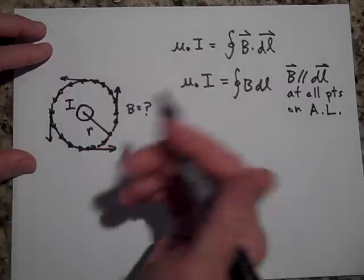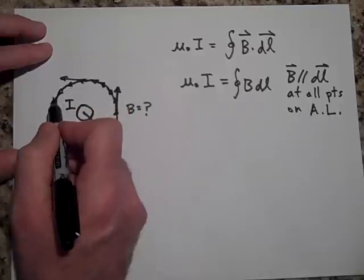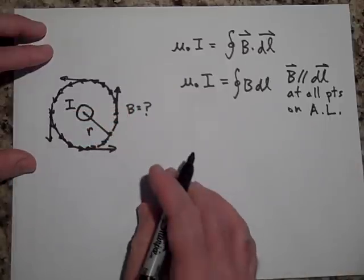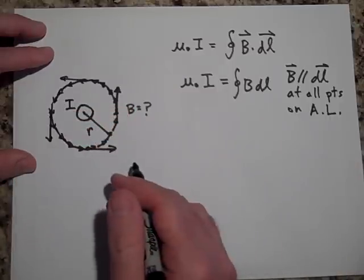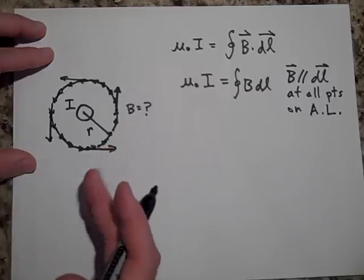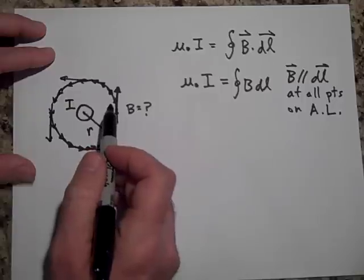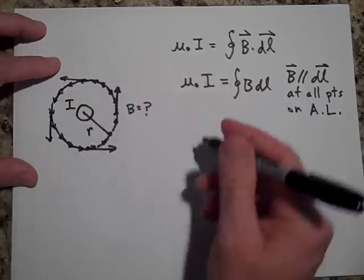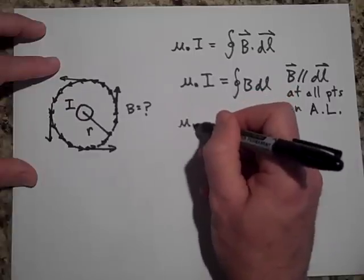I'm going to make the argument that B shouldn't be any different at each point on here as far as magnitude goes - not direction, but magnitude. And so that's why we need symmetry. Without symmetry we can't make that argument, but because it's symmetric I can. And so μ₀ times I...